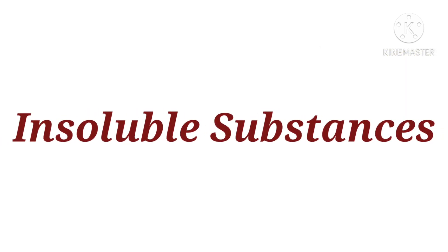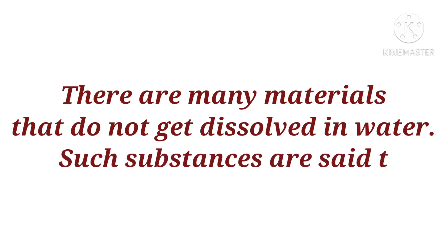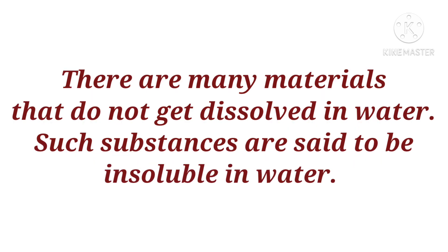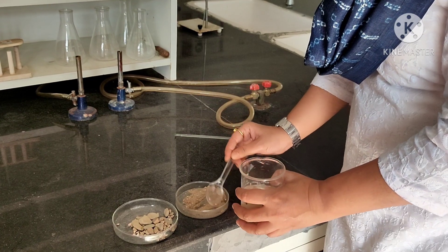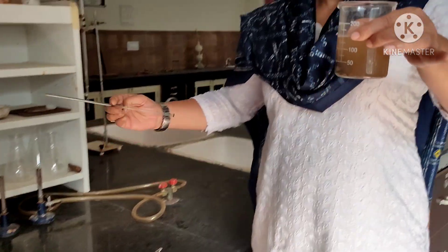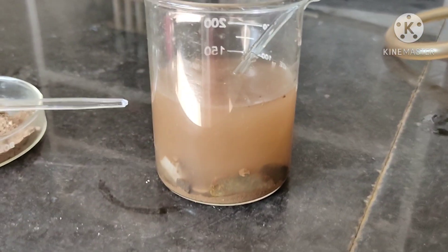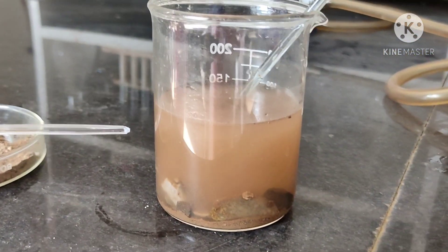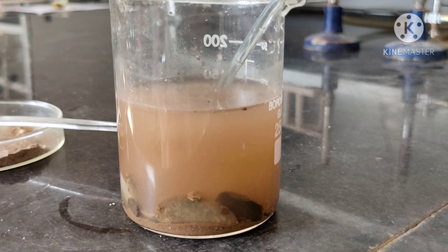Now children, we are going to study about insoluble substances — jo paani mein dissolve nahin hote. There are many materials that do not get dissolved in water; such substances are said to be insoluble in water. Let's perform the activity to understand this. We will take some water in a glass beaker and add some sand to it, then stir thoroughly. Then we will add some tiny pebbles to the same container and stir again. What do we observe? Sand and pebbles do not disappear in water — they are clearly seen as separate entities. This shows that sand and pebbles are insoluble in water.